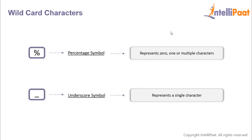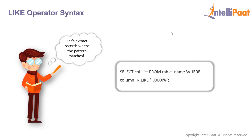The LIKE operator is used in conjunction with wildcard characters, and there are two wildcard characters. The first one is the percentage symbol and the second one is the underscore character. The percentage symbol is a substitution for zero, one, or more characters, while the underscore character is a substitution for a single character. This is the syntax for the LIKE operator — after the WHERE clause, give the column name followed by the LIKE operator and then the pattern you want to extract inside single quotes.